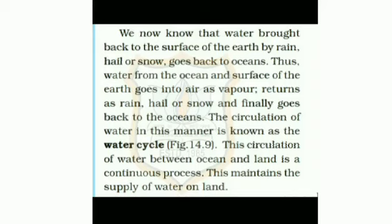We know that water brought back to the surface of the earth by rain, hail or snow goes back to oceans. Thus, water from the ocean and surface of the earth goes into the air as vapor, returns as rain, hail or snow, and finally goes back to the ocean. The circulation of water in this manner is known as the water cycle — you can see figure 14.9. This circulation of water between ocean and land is a continuous process and maintains the supply of water on land.